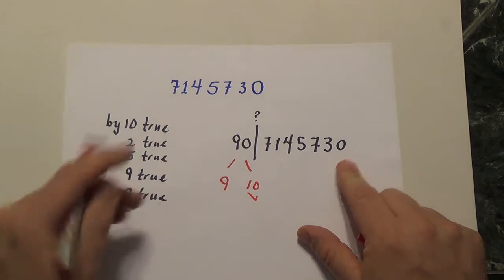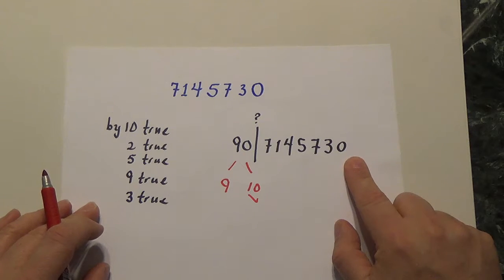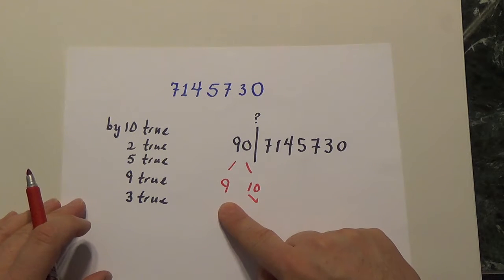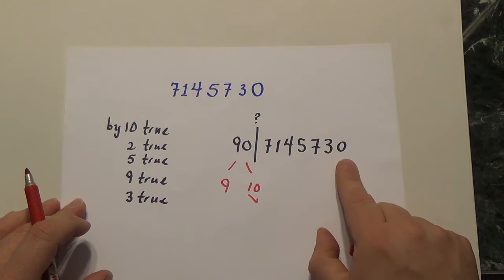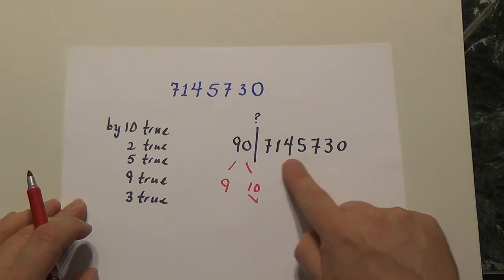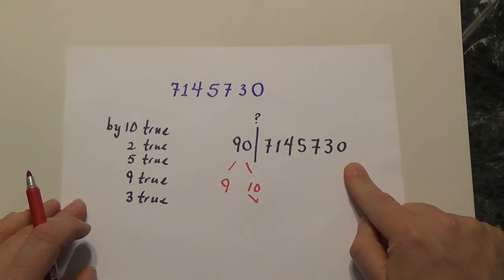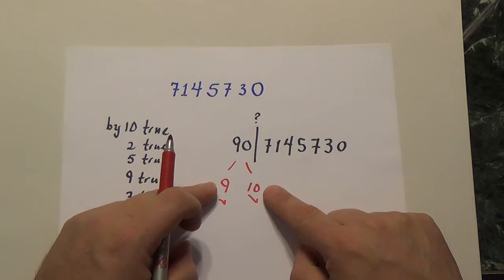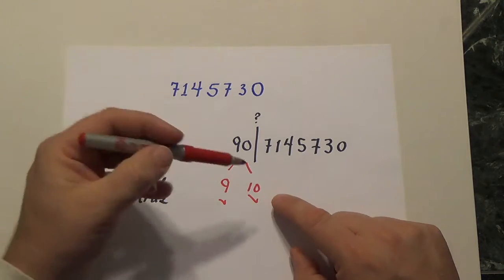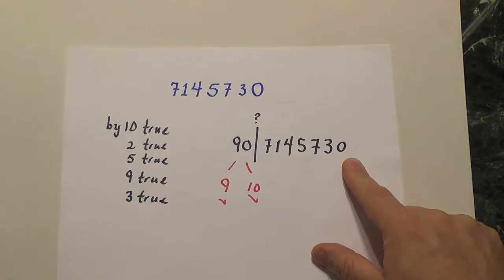Then I might ask myself, does 9 divide 7145730? And I would have to say yes, because the sum of these digits is a multiple of 9. And since these were a relatively prime pair, I know their product divides this number.